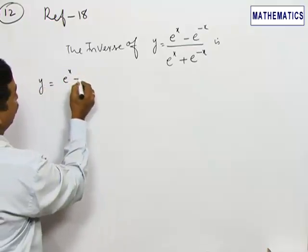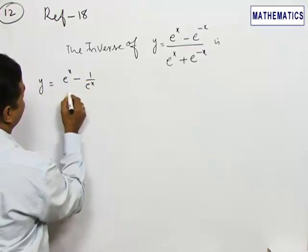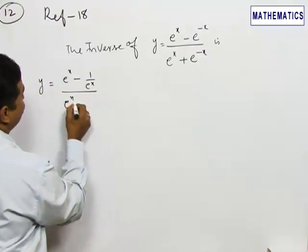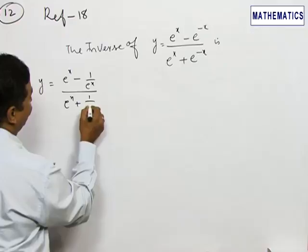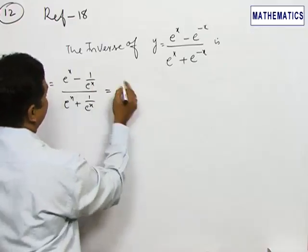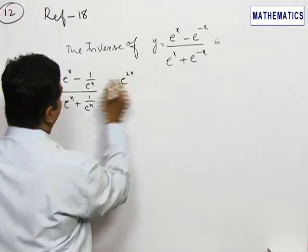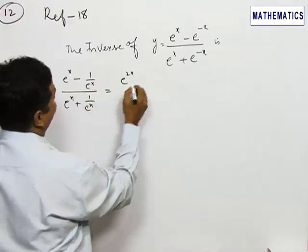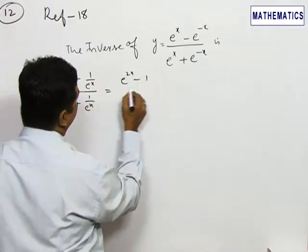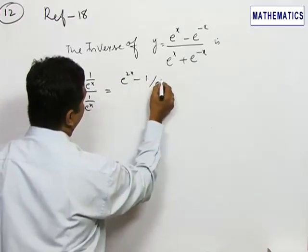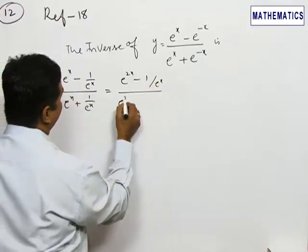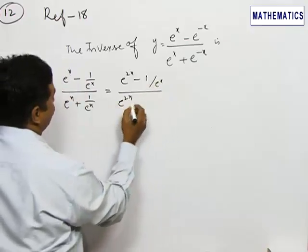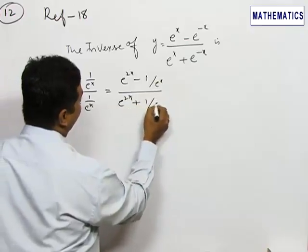We can write this as (e^x minus 1/e^x)/(e^x plus 1/e^x). Taking the LCM, we get e^x times e^x, which is e^(2x) minus 1/e^x in the numerator. In the denominator, we have e^x times e^x, which is e^(2x) plus 1/e^x.